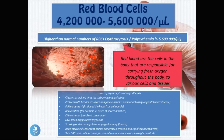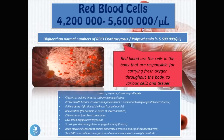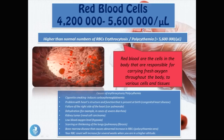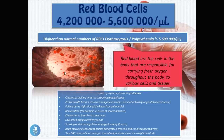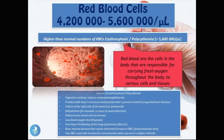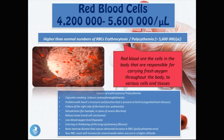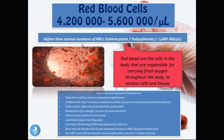Now let's talk about the red blood cell count. The normal value is 4.2 million to 5.6 million per microliter. As seen in this picture, red blood cells flow through blood vessels and are the cells responsible for carrying fresh oxygen throughout the body to various cells and tissues, making them very important.